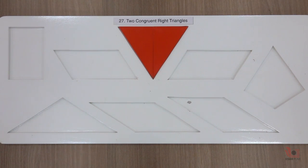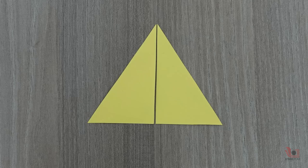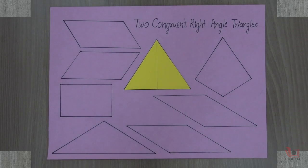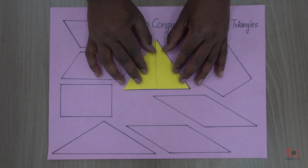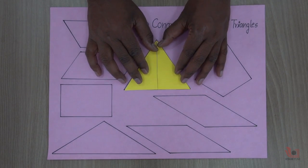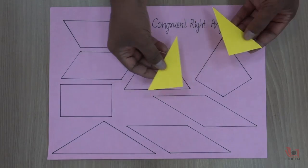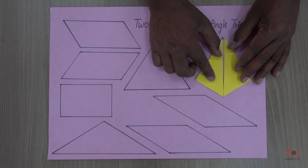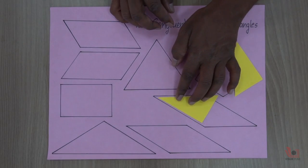You can make your own model using card sheet or thicker paper. Cut two congruent right-angle triangles and arrange them in different orientations to make various geometrical shapes. You will notice that all the geometrical shapes look different but they all have the same area.